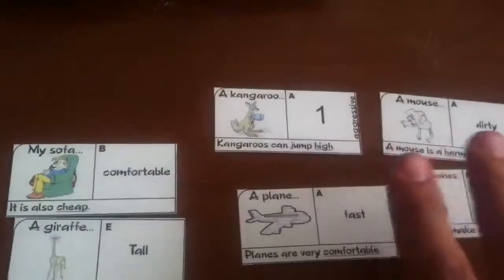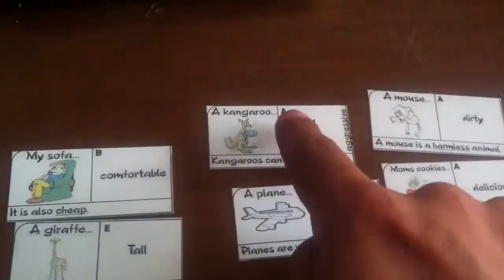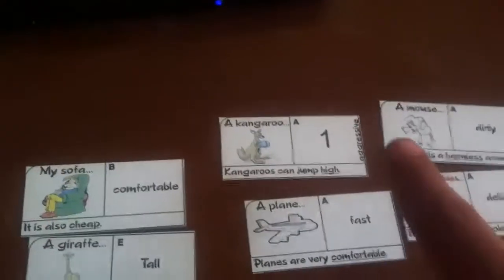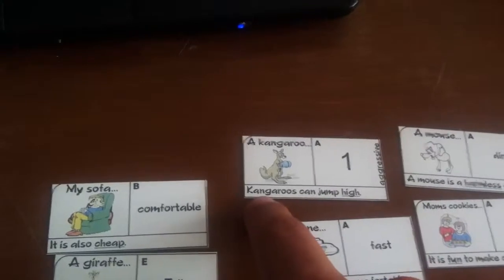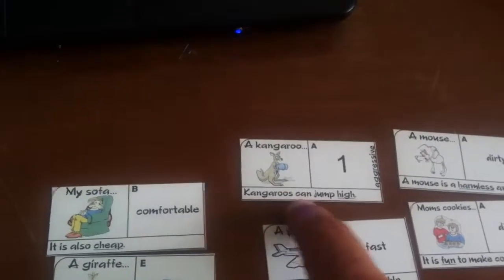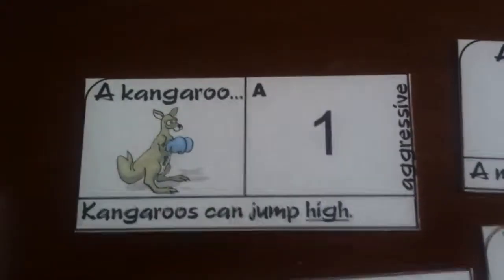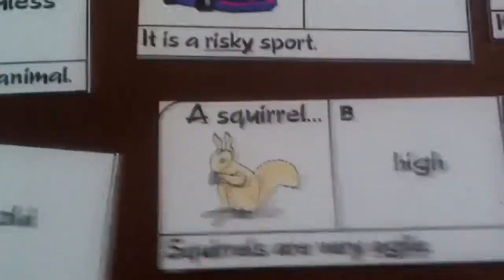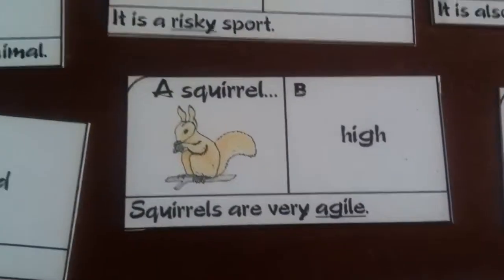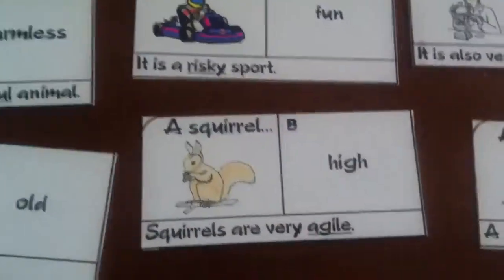Once everybody has a card, one of the students from section A is going to start with card number one. He's going to say: 'Kangaroos can jump high.' Now, as you can see, we have an underlined word that says 'high.' He has to repeat this word — 'high.' So whoever has the word 'high' is going to say, 'A squirrel can jump higher than a kangaroo.'